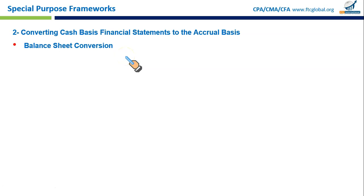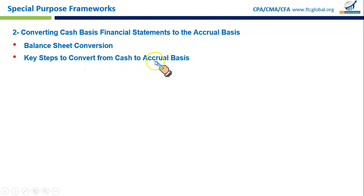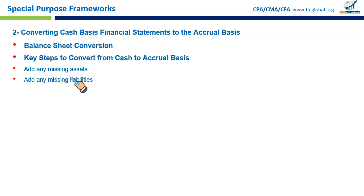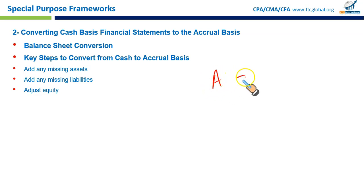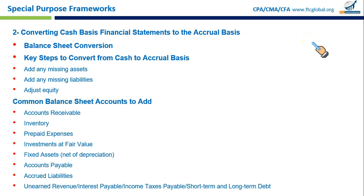Key steps to convert from cash to accrual basis: First, add any missing assets — assets that exist in the business but are not recorded under cash basis, like inventory or fixed assets. Second, add any missing liabilities — such as debt payable or taxes owed. Third, adjust equity to reflect the difference between total assets and total liabilities, bringing the accounting equation into balance. Equity becomes the balancing figure.